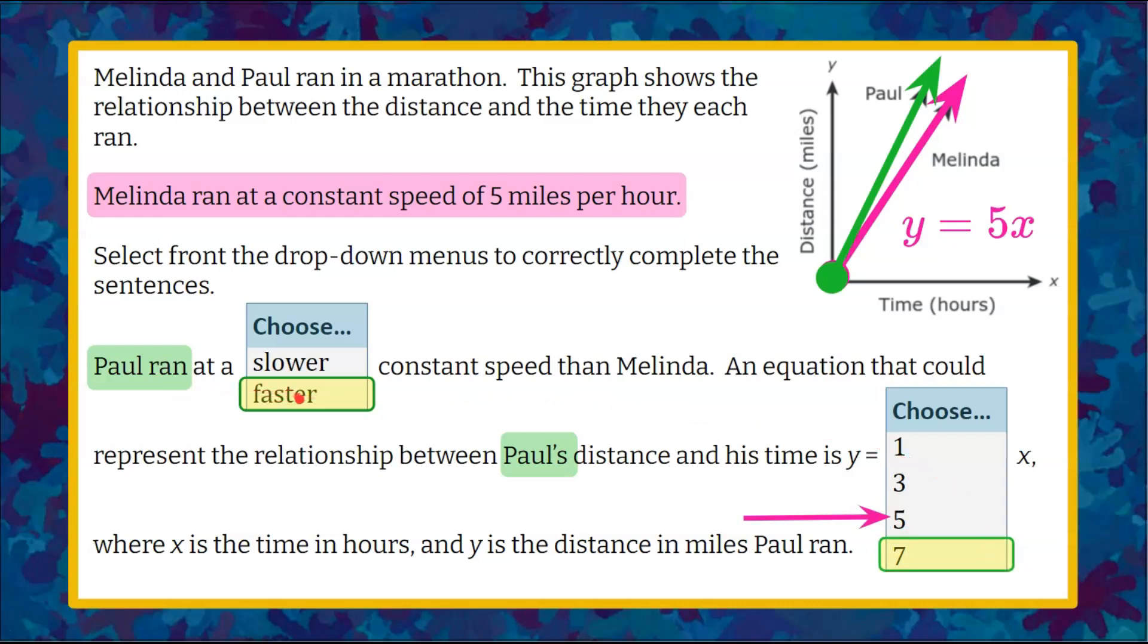So we know that Paul ran at a faster constant speed than Melinda, and the only thing that could represent his line right here is y equals 7x.